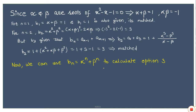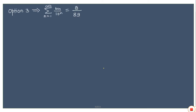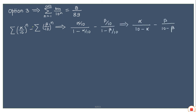Now checking option 3: the infinite summation of bₙ/10ⁿ equals 8/89. We already have bₙ = αⁿ + βⁿ. Substituting and dividing by 10ⁿ, then separating the terms, I split the summation into two separate infinite sums involving (α/10)ⁿ and (β/10)ⁿ.